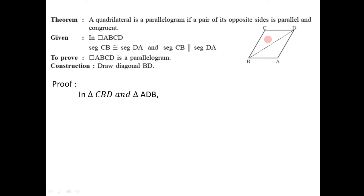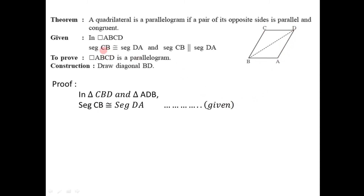We are going to try to prove that these two triangles are congruent. For these two triangles we have the congruent constituents. The first is segment CB is congruent to segment DA, as it is given. So this is the first constituent.